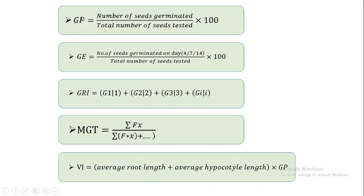The first one is germination percentage. The formula is: number of seeds germinated divided by total number of seeds tested in the experiment, multiplied by 100. This will give you the value of germination percentage.